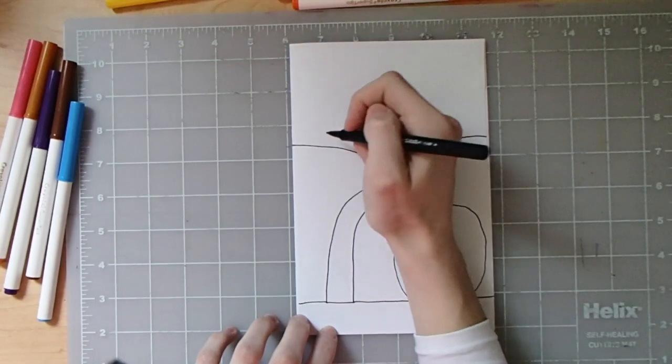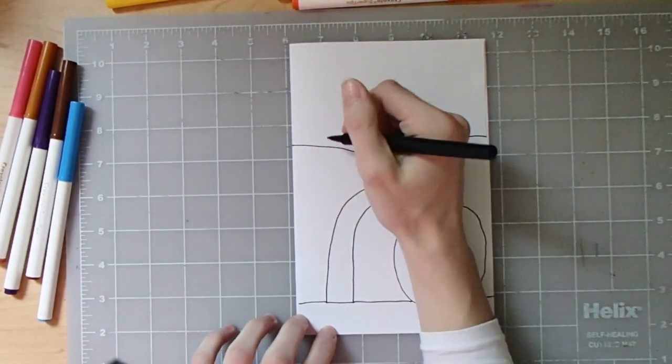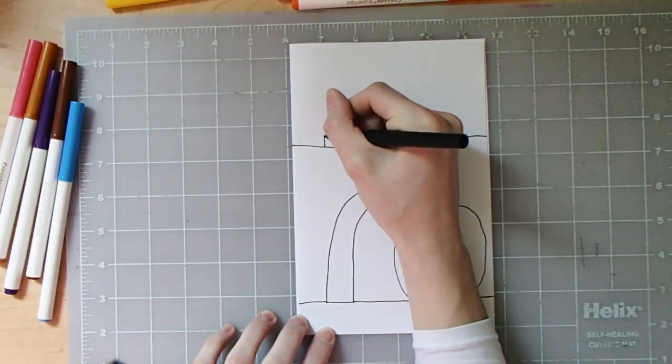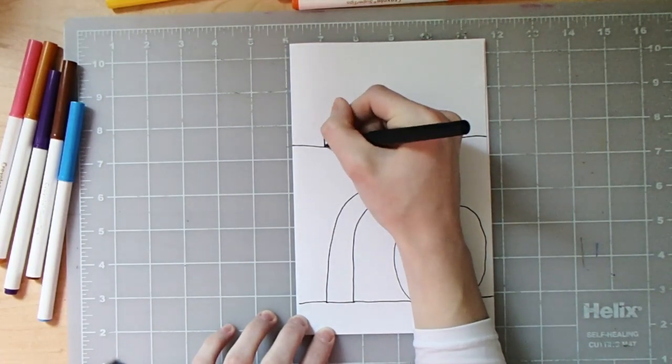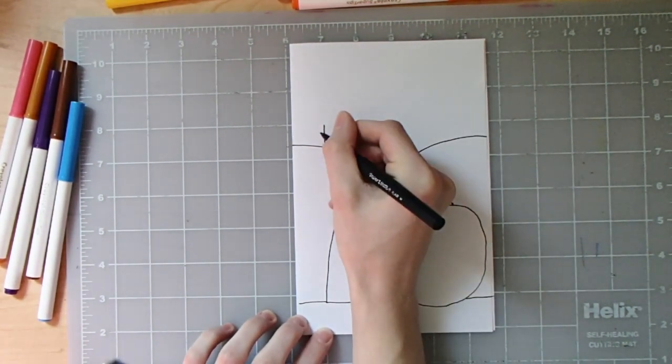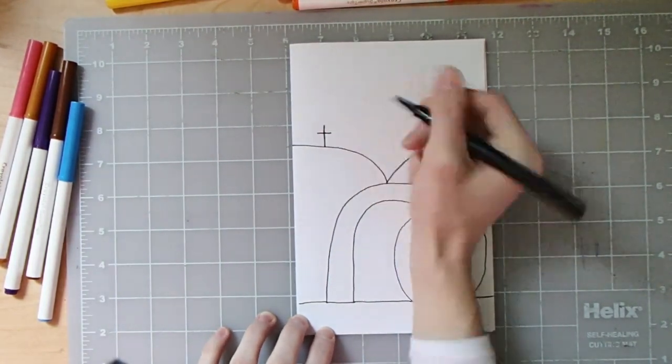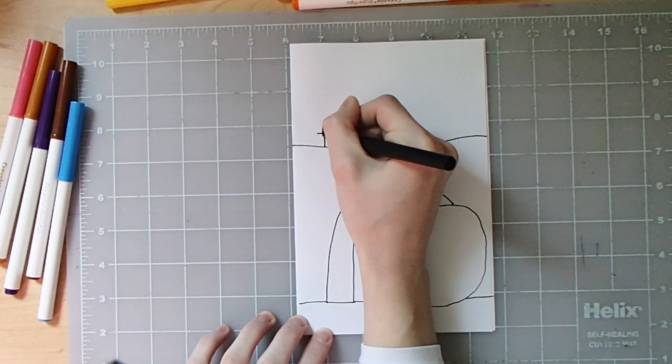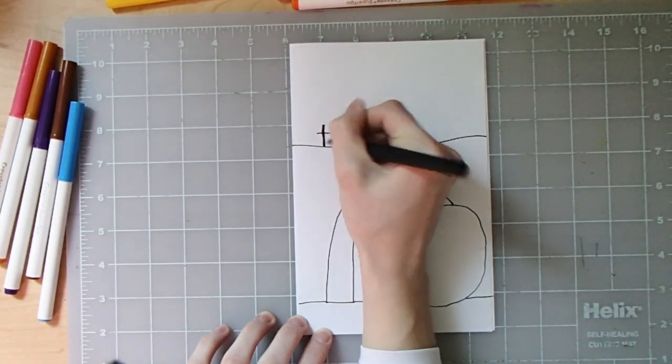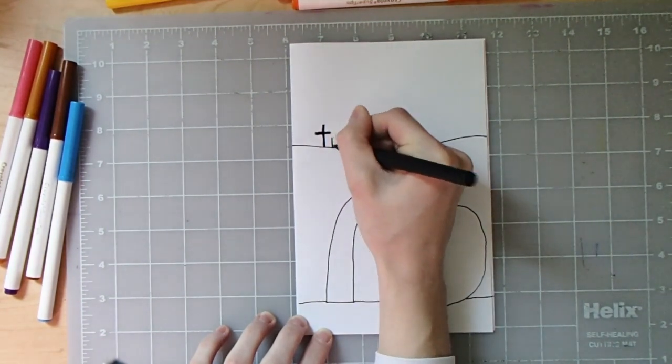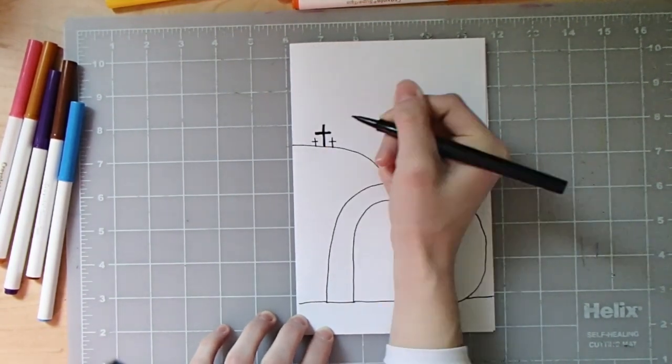The next thing we're going to do is we're going to add the three crosses on the top of this hill to represent where Jesus was crucified before Easter. I'm going to draw a letter T for a cross. And I'm going to draw on top of the letter T to make the line thicker. Then next to the letter T I'm going to draw two smaller letter T's to be the two other crosses.